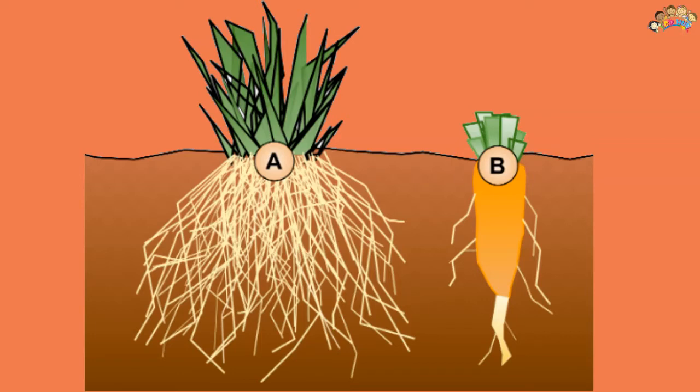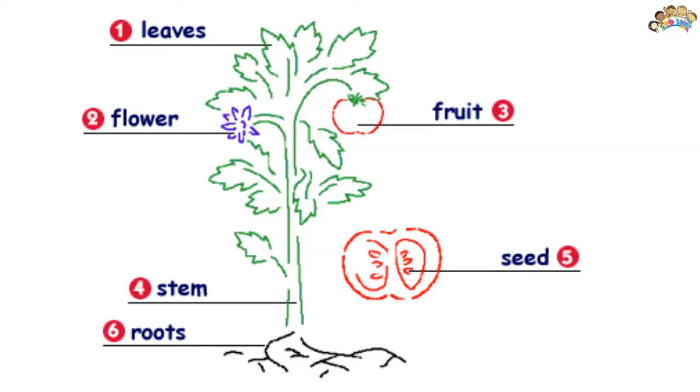The radicle is the first organ to appear when a seed germinates. It grows downward into the soil, anchoring the seedling.